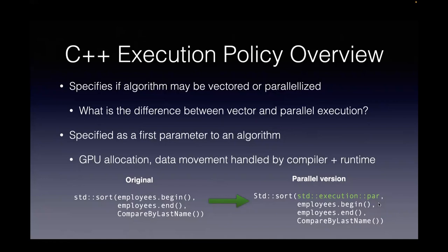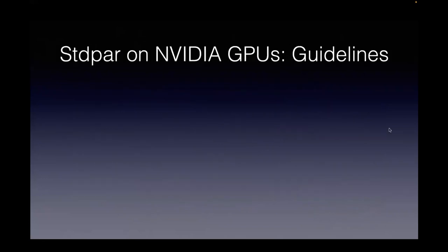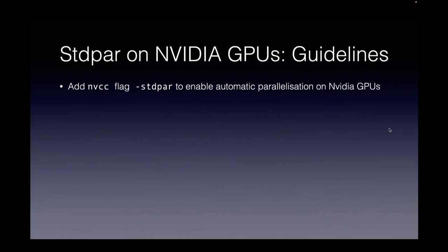'stdpar' is an implementation of the execution policy on NVIDIA GPUs — this is what you'll be working with in your assignment. All you need to do is add the flag '-stdpar' to your NVC++ compilation. If you've used execution policies with the four execution policies highlighted previously, your STL algorithms will get automatically parallelized. If the hardware is available and an implementation for parallelism is available — and all STL algorithms have parallel implementations — they get automatically accelerated on the GPU without you having to do anything at all.